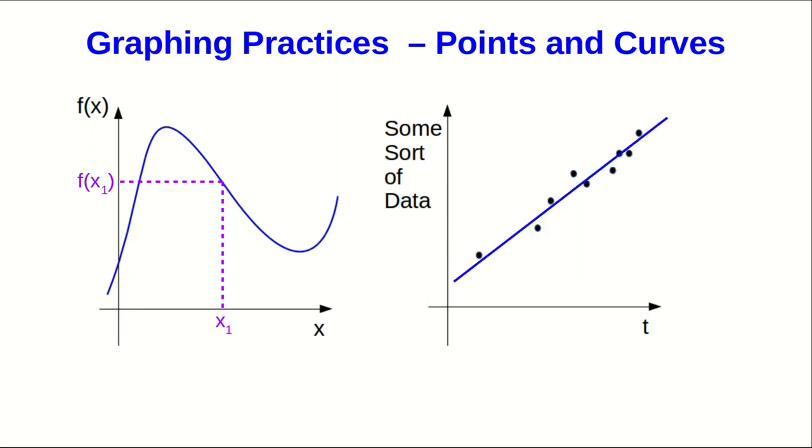However, what you often do is draw what's called a best fit line or a trend line or best fit curve or something like that that goes through it. When we do this, we are stating a hypothesis. We're saying that we believe that underlying the data is some function and that this best fit curve is our best estimate of what that underlying function is and that the reason the data doesn't fall right on it is because of measurement uncertainty. But because there's measurement uncertainty, we actually are not certain of that line or curve either.